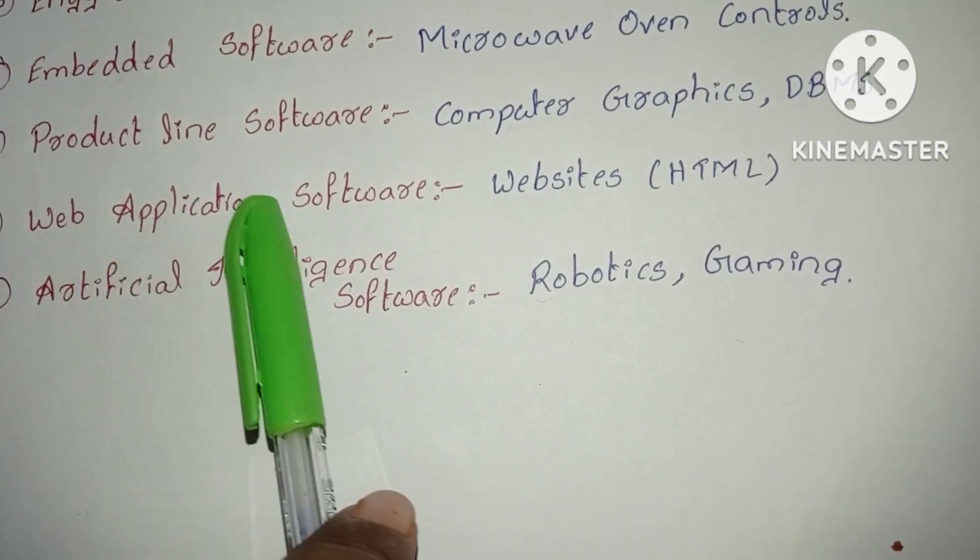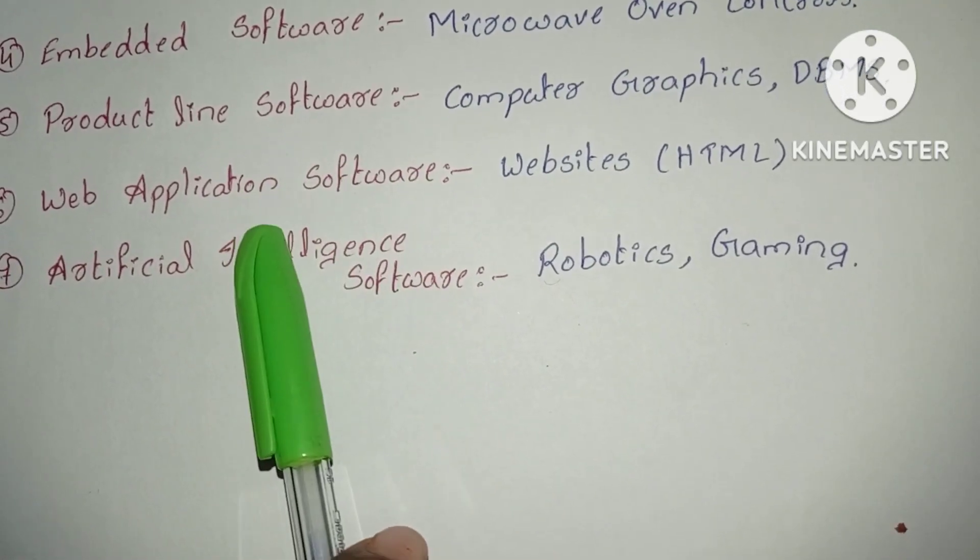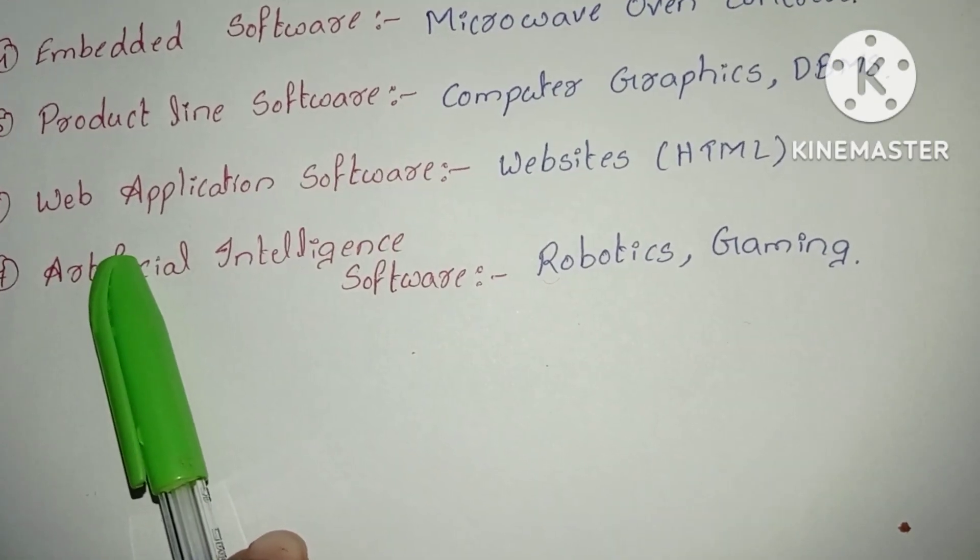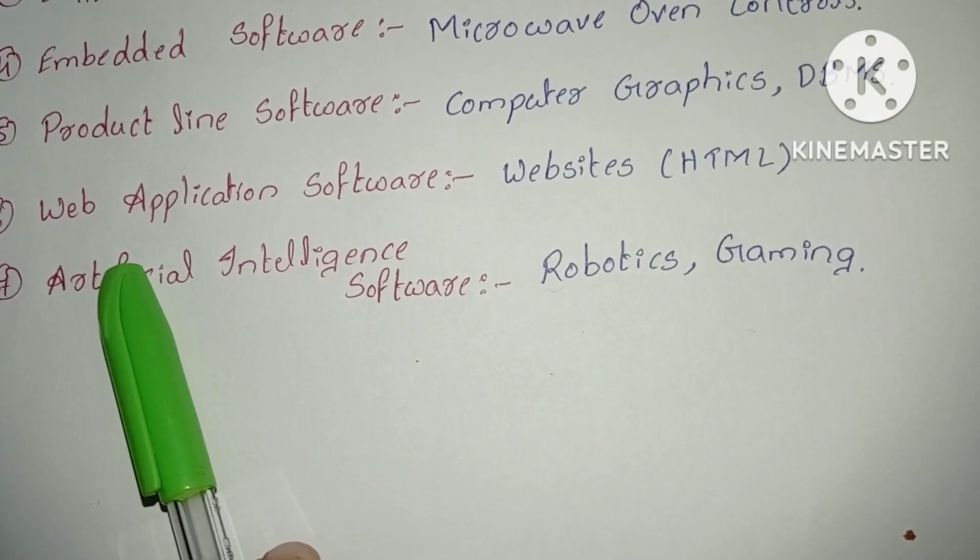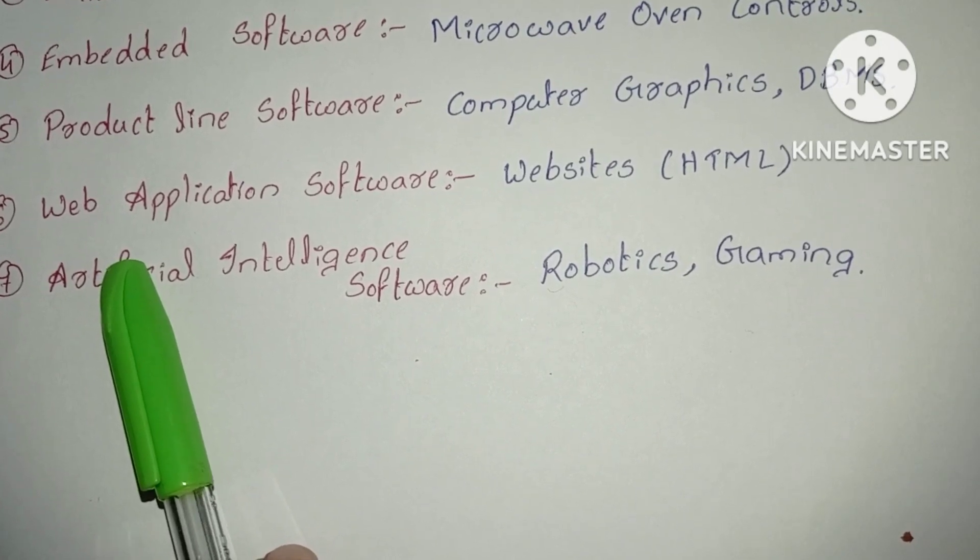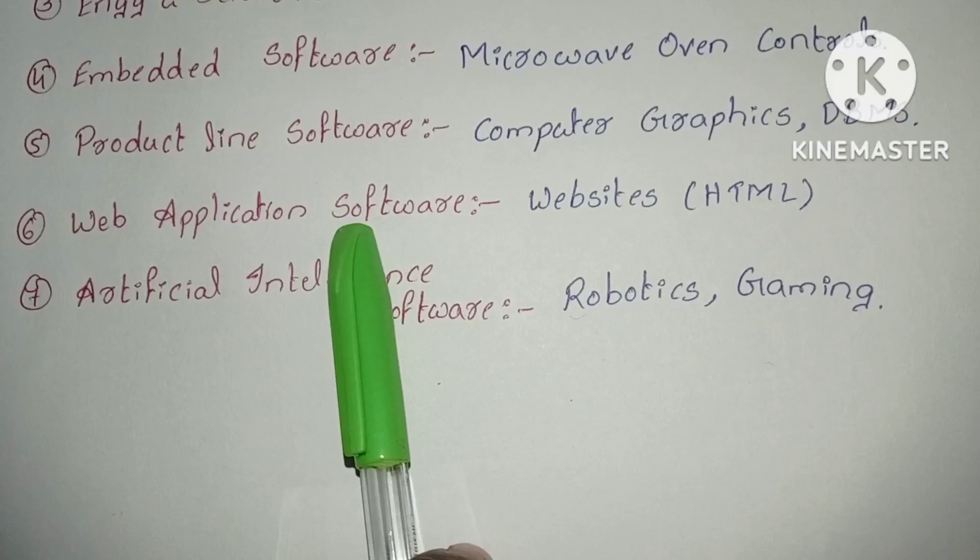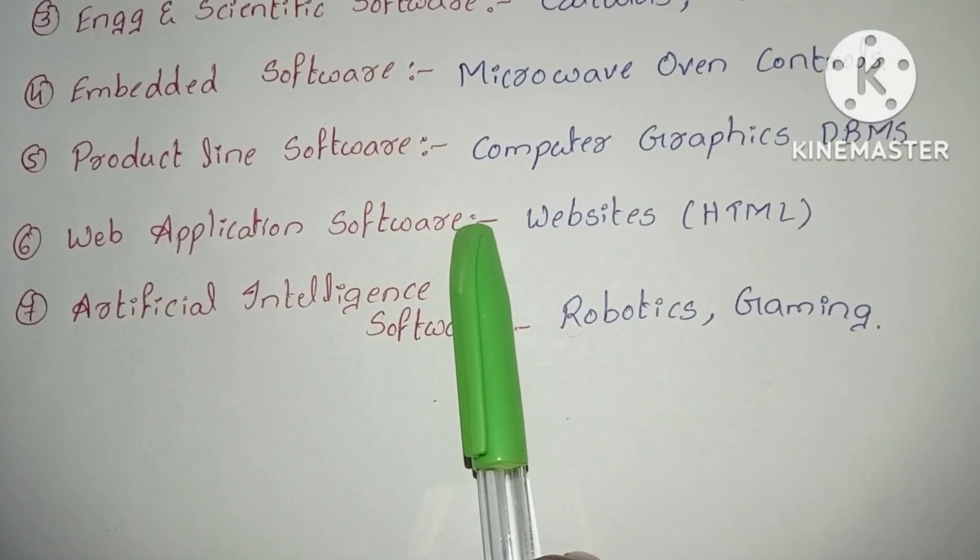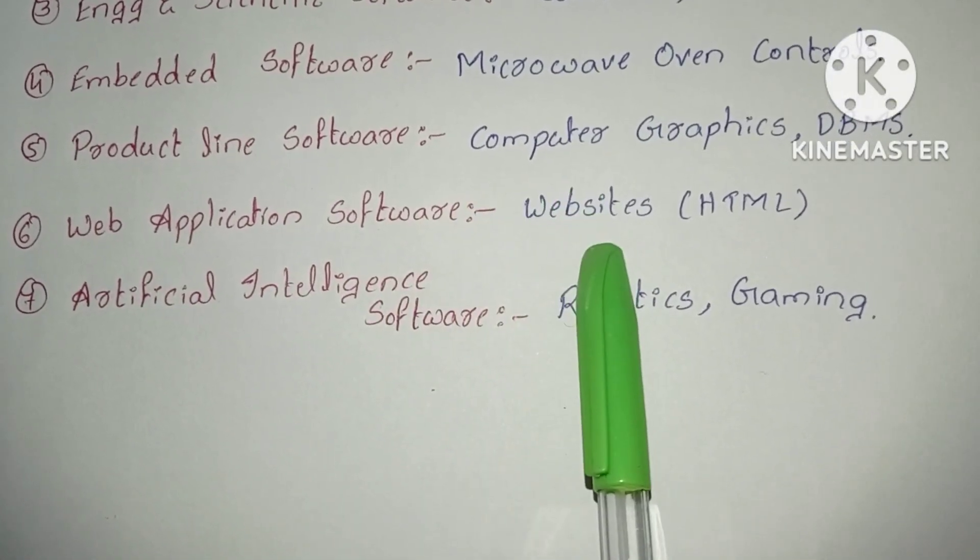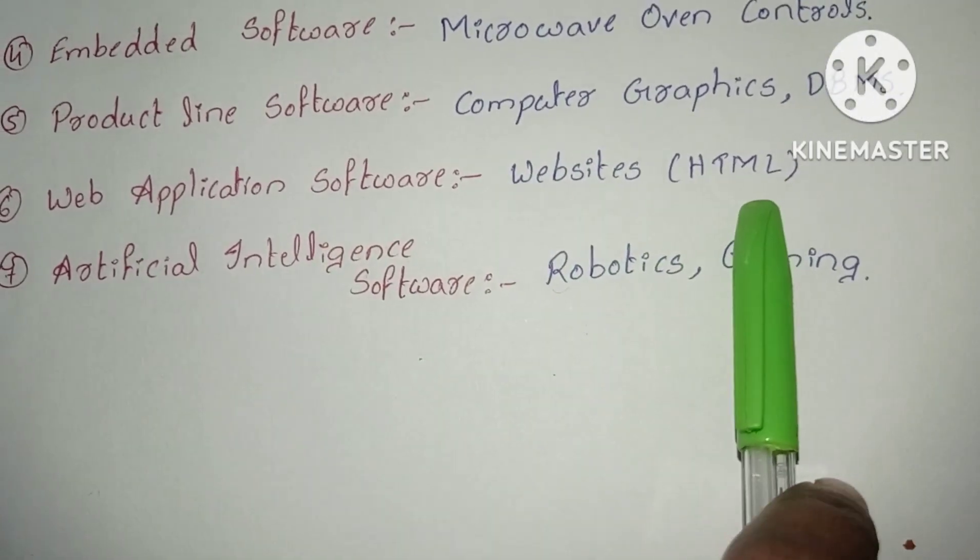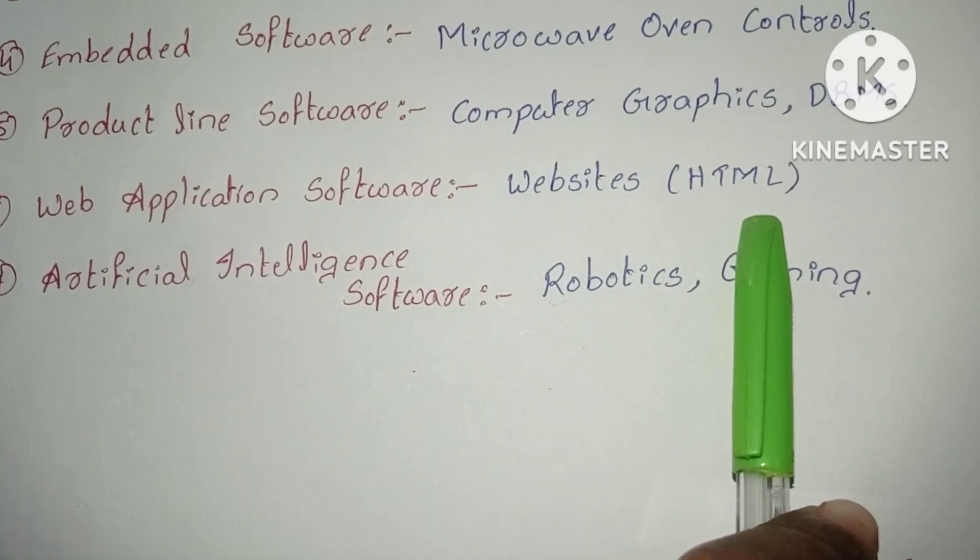Sixth is web application software. By the name itself it is an application software related to web. If anything we have to use over a network, we have to choose web application software, for creating websites. Best example is HTML, hypertext markup language.